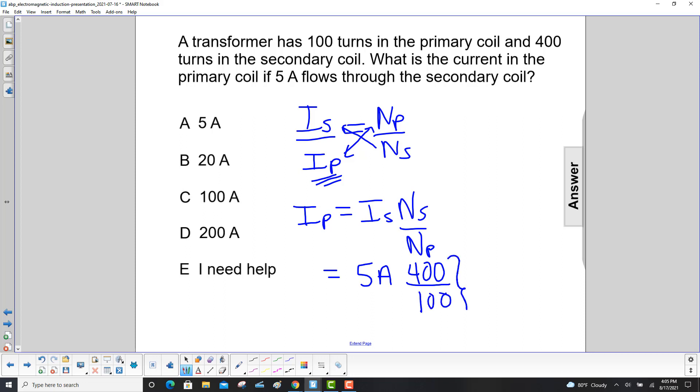And again, these are unitless, so all we're going to have is amps left over. So 400 divided by 100 is 4, 4 times 5, and we get 20 amps. The answer is B. Thank you.